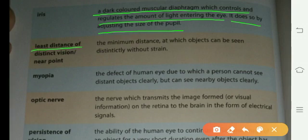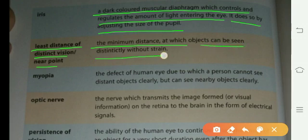Least distance of distinct vision or near point: the minimum distance at which objects can be seen distinctly without strain.